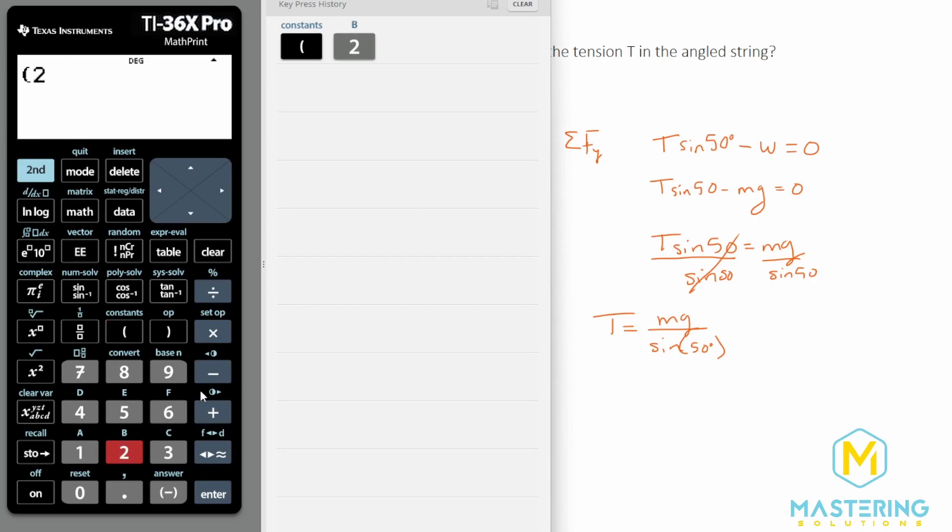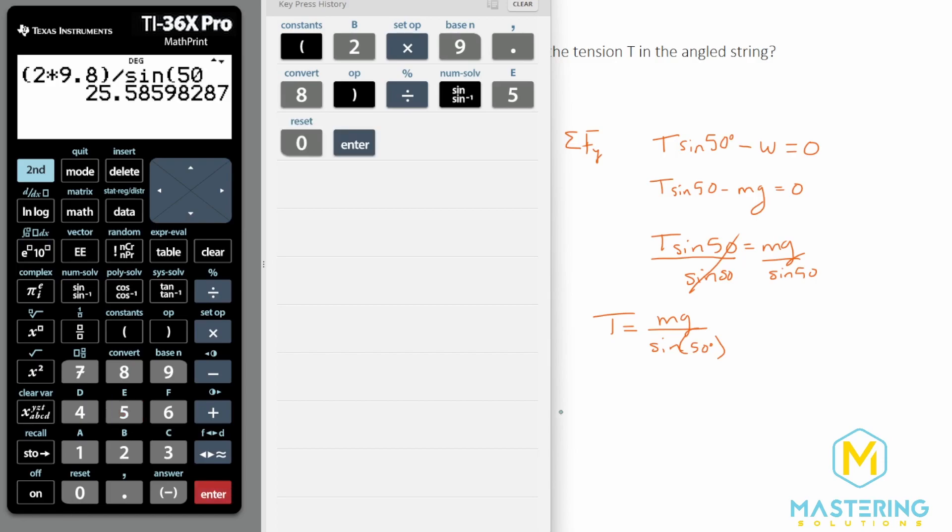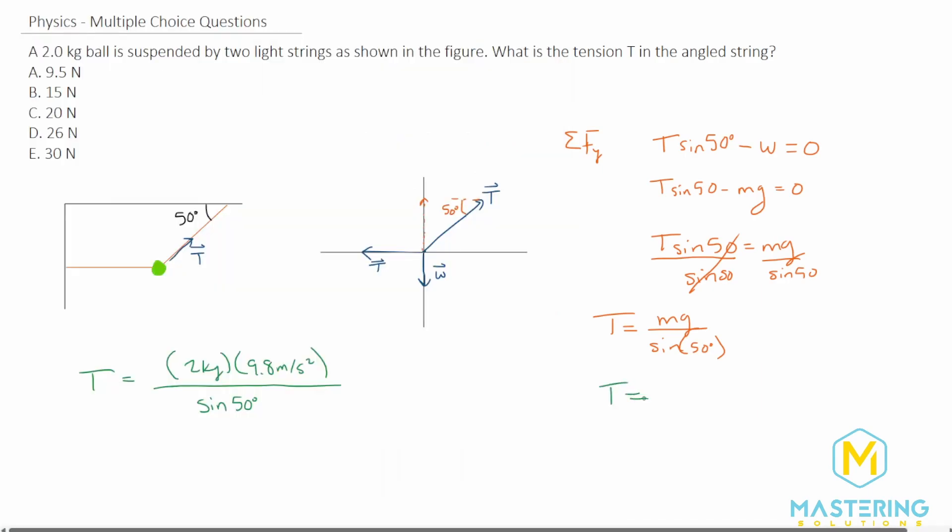So 2 times 9.8 divided by sin 50 gives us 25.6. For two significant figures, T equals 26 newtons. Looking at our answer choices, the answer is choice D.